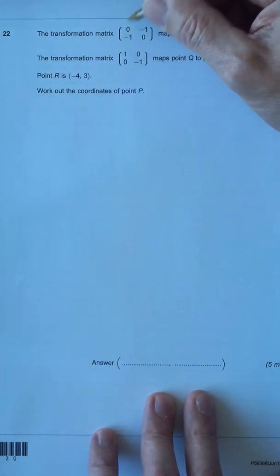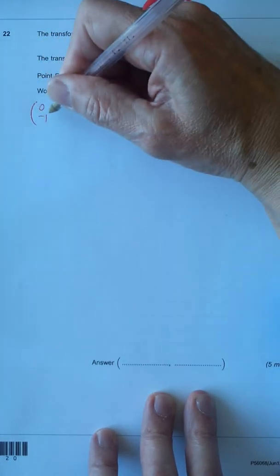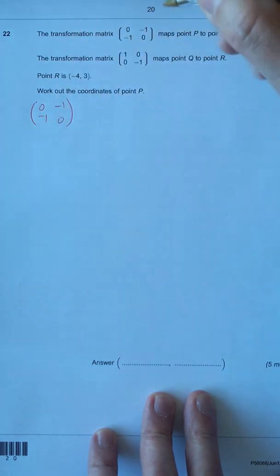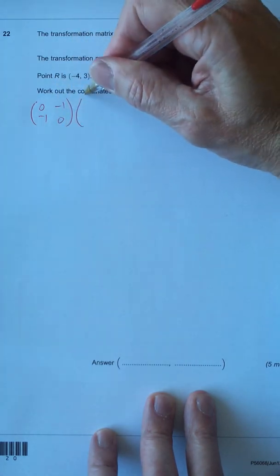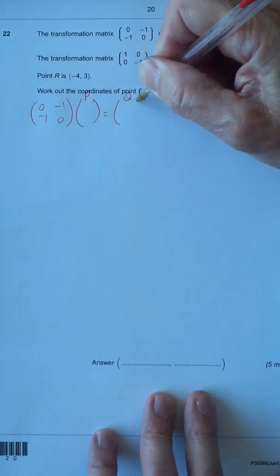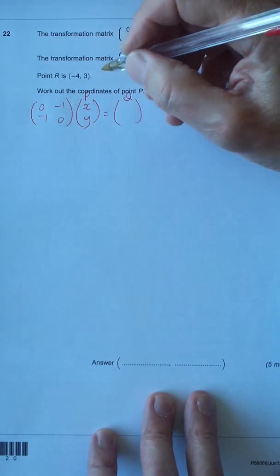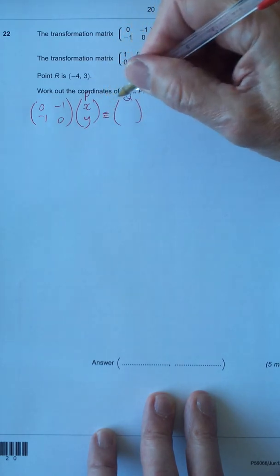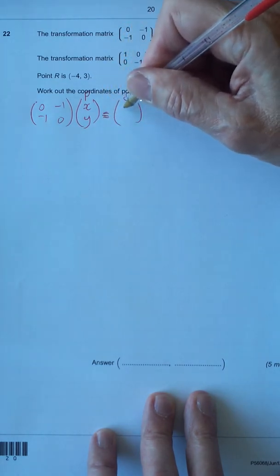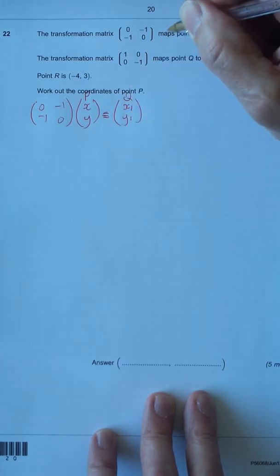We've got the first transformation matrix, which is 0 minus 1, minus 1 0, which maps P onto Q. So P, we get an X and a Y coordinate. And that gives us equals Q, which is a different X. So we'll call that X1 and a different Y. We'll call that Y1.